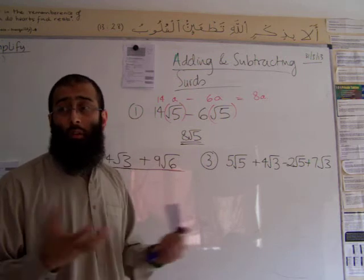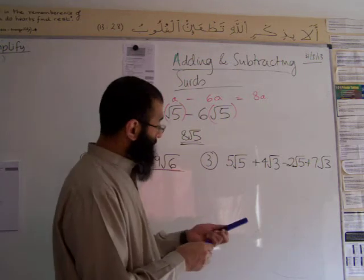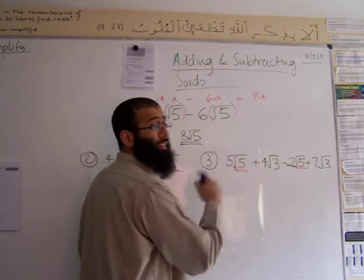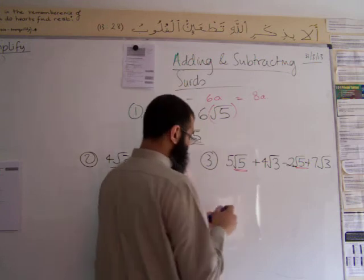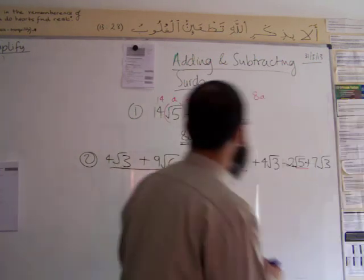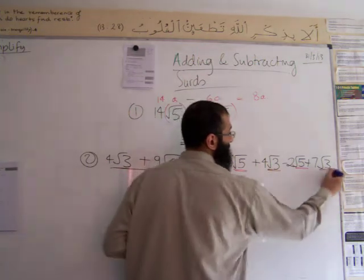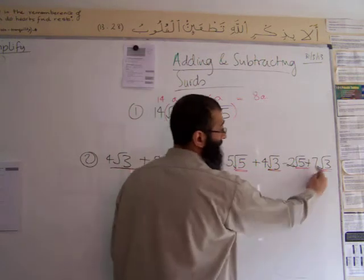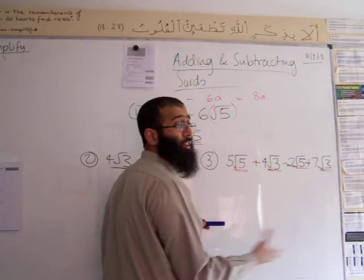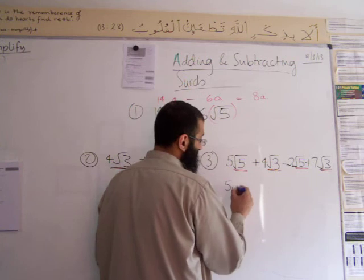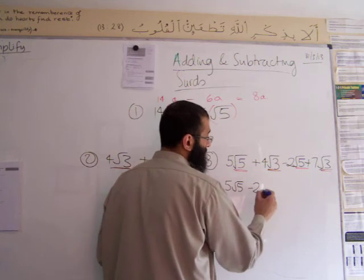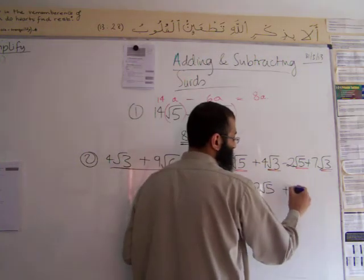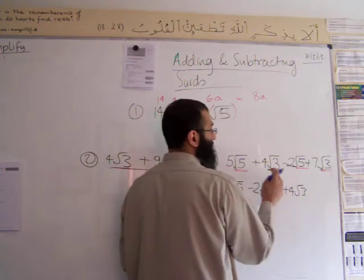The next question looks pretty long. Now let's have a look. Sundas, what do you realize here? These two are like terms. And what do we realize about this next one, Samir? These two are also like terms. So we do the red ones together first. As long as you keep the sign in front of it when you move it, you're allowed to move it. So we have 5 root 5 minus 2 root 5 — that would be the red part simplified. And then we have plus 4 root 3, which is this part.